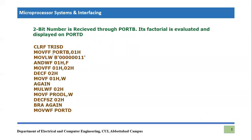This is very important to understand — why we are doing this. We are doing Move Literal to Working with binary 00000011. So there are a total of eight bits: the most significant six bits are zeros, and then the last two bits are one, one. So the working register W would become 00000011.